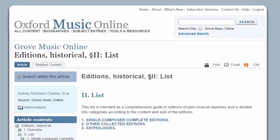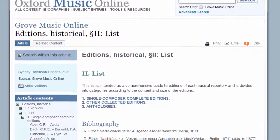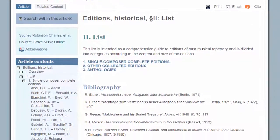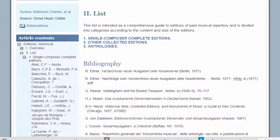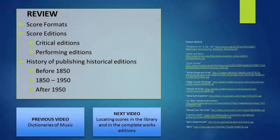A bibliography of collected works and critical editions can be found in Grove Music Online within the Editions Historical entry. In this video, we have reviewed the various score formats and editions available in the music library. An overview of the history of publishing historical editions has also been covered, from before 1850 through to the current day. The next video in this series focuses on locating scores in the library and in complete works editions.